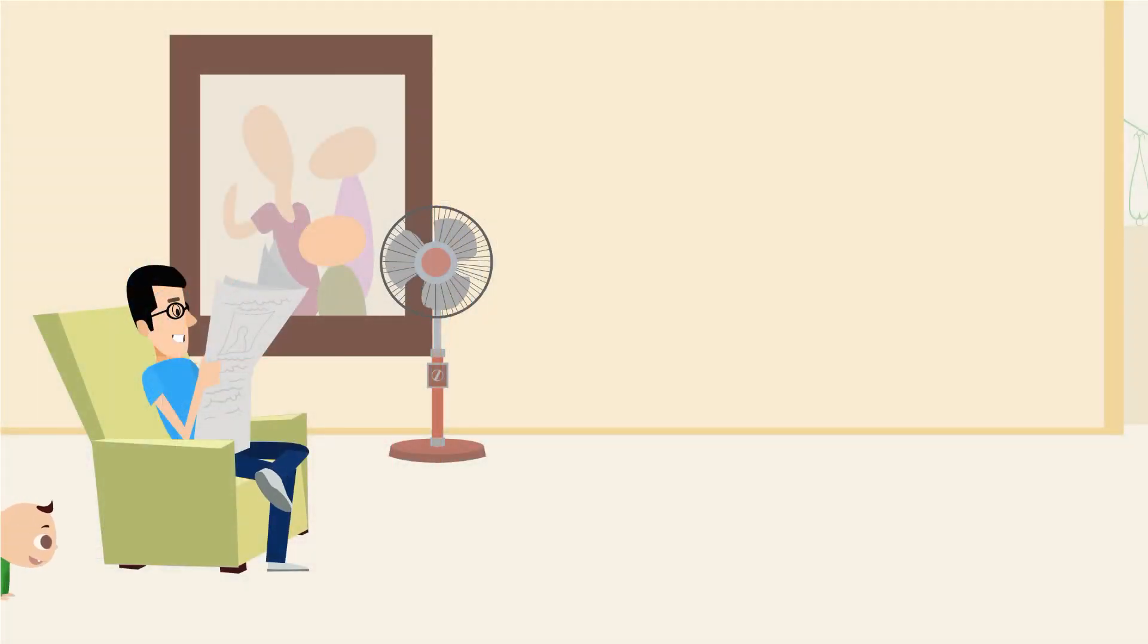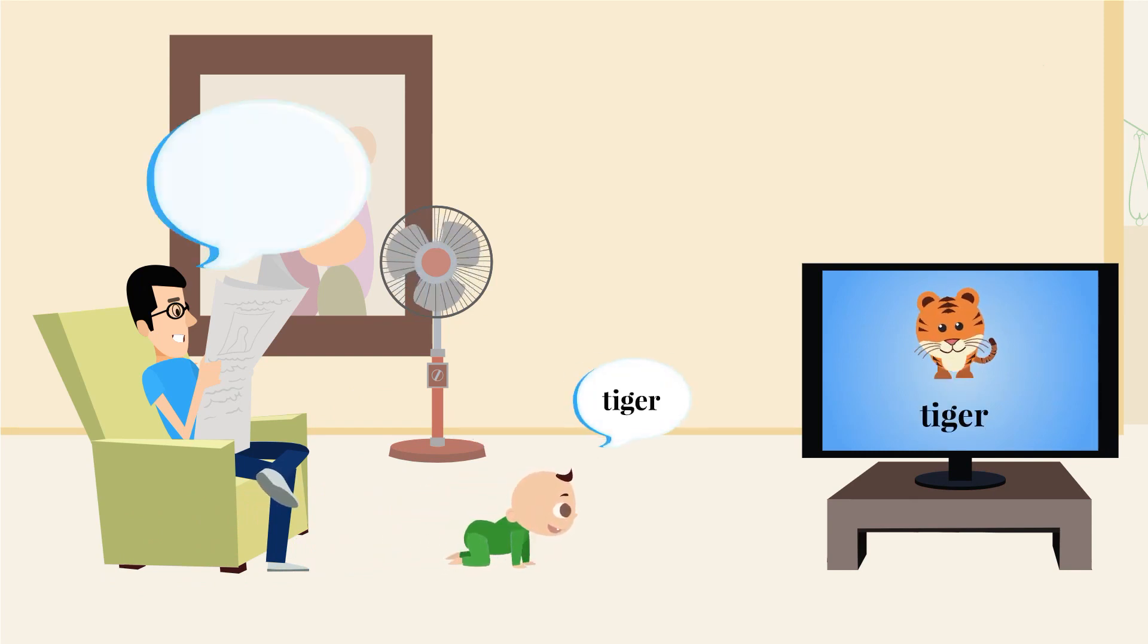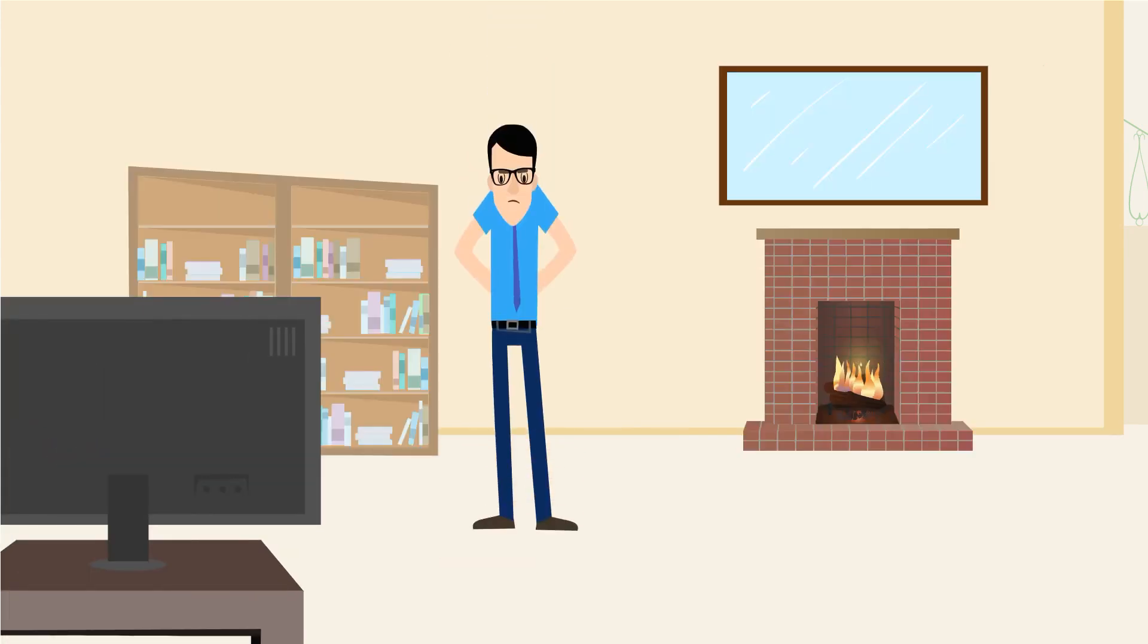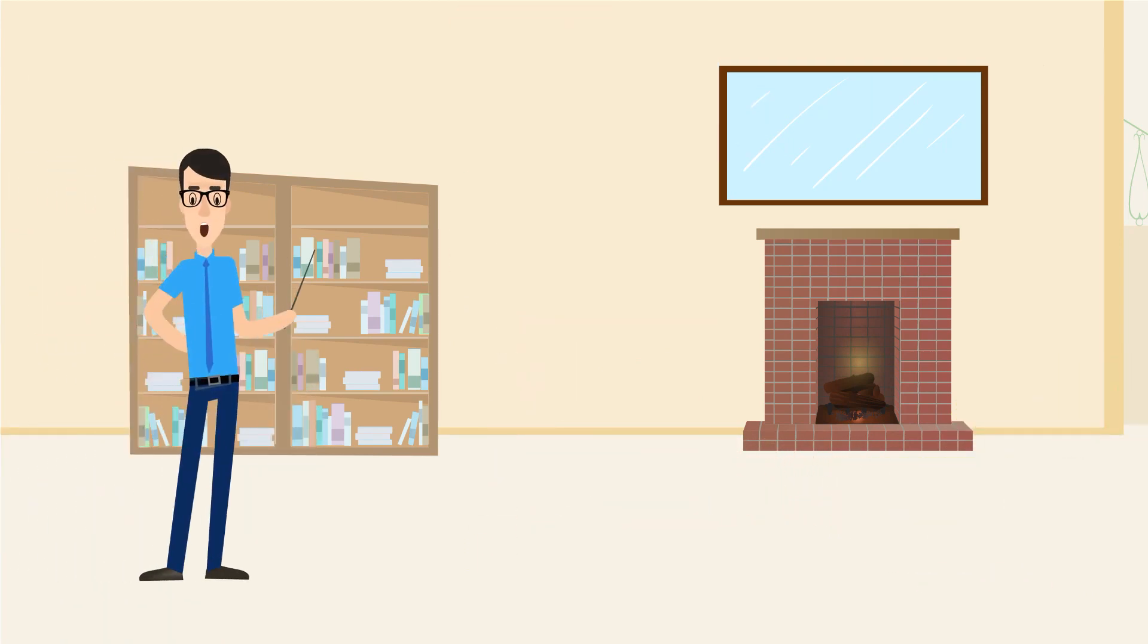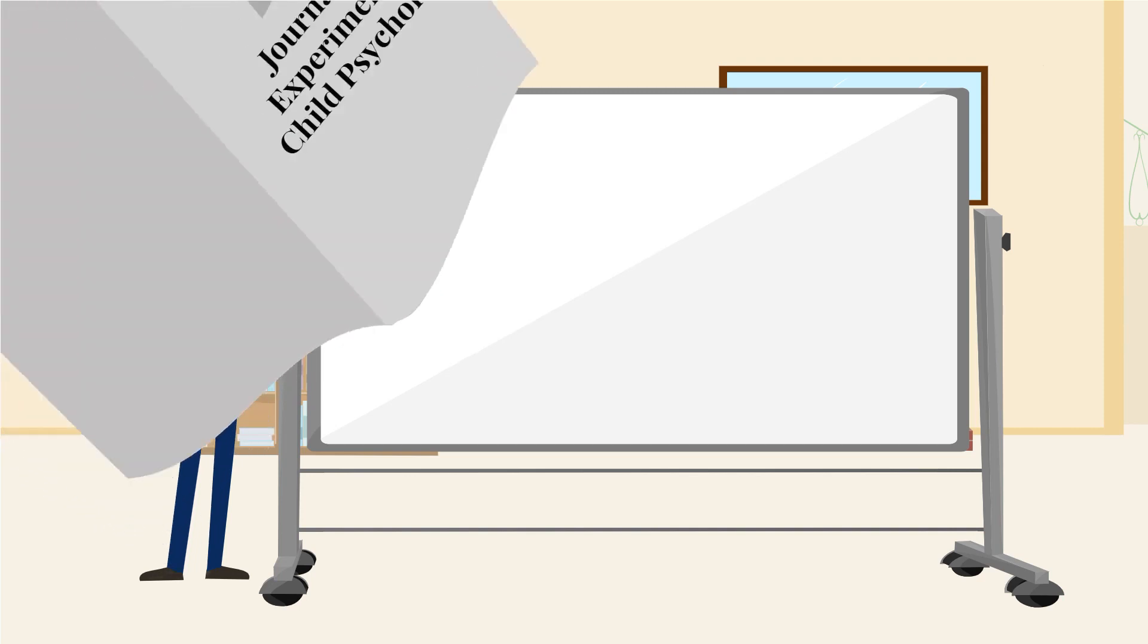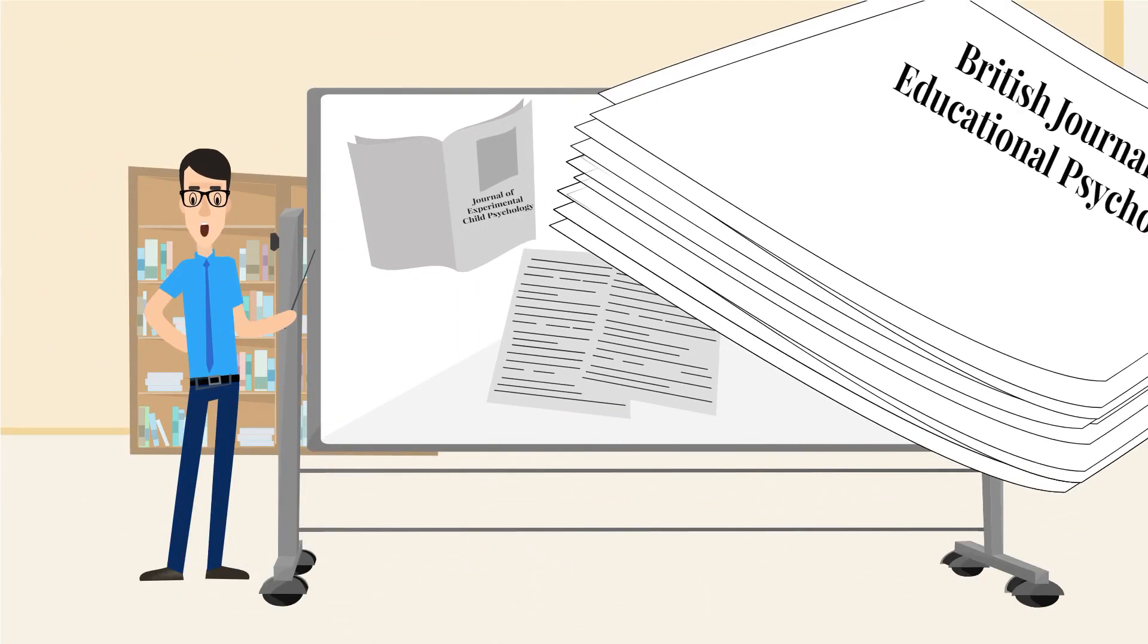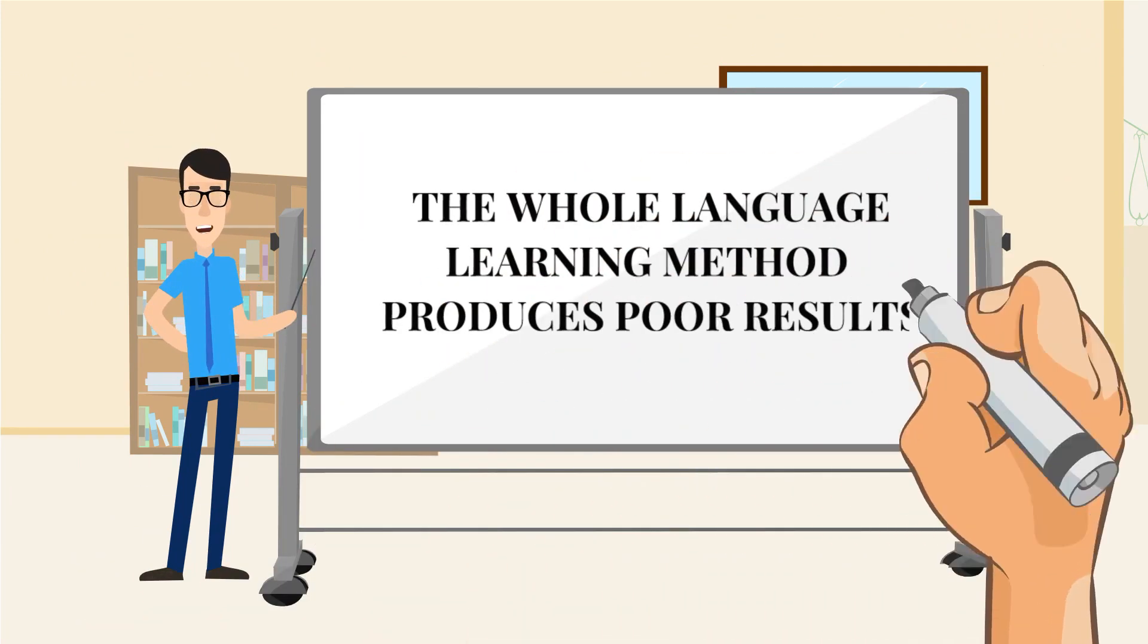Many years ago, when my first child, Rain, was just a baby, we had seen this infomercial showing babies reading whatever word was shown on the screen. Without much thought, we jumped onto this bandwagon and spent several hundred dollars. Sadly, it quickly became clear that our child did not learn to read but simply memorized word shapes. This was a whole language-based method, teaching children to recognize words as whole pieces and read by memorizing word shapes. In fact, the large amount of research I had reviewed during that time had confirmed my very own firsthand experience that the whole language learning method produces poor results.